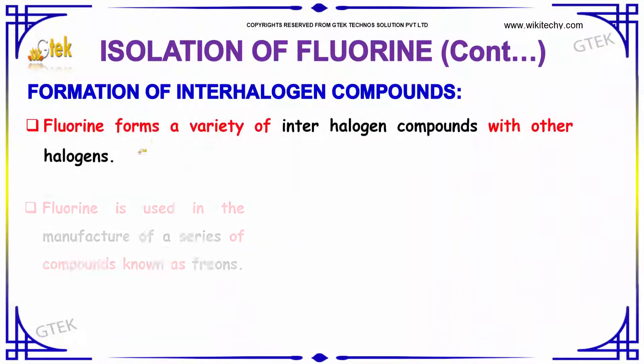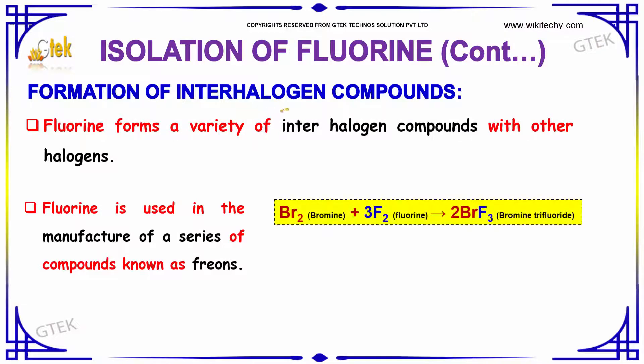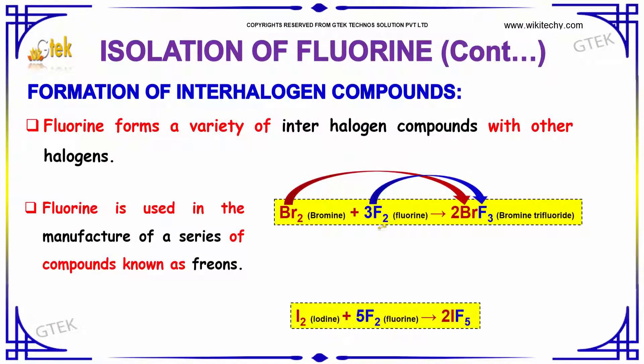Formation of Interhalogen Compounds: Fluorine forms a variety of interhalogen compounds with the other halogens.